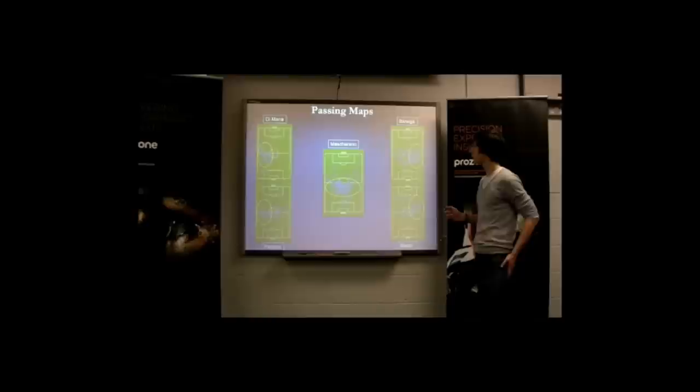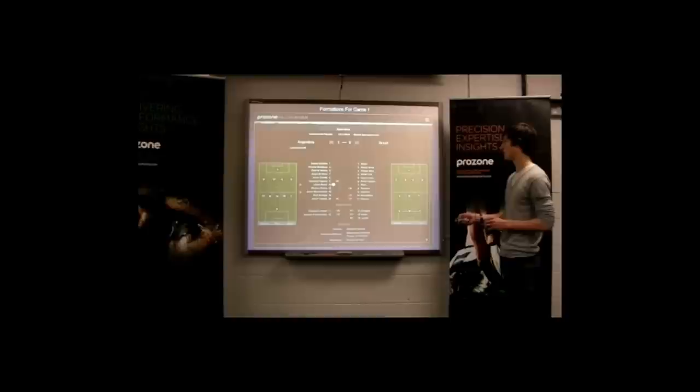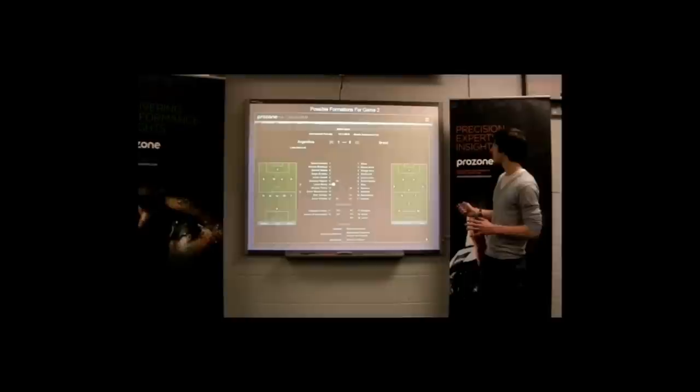As we saw earlier, the passing map showed how dominant Argentina were in midfield. From the formation, we can see the Brazil formation had three in the centre midfield, where Argentina had five. It just showed how dominant the five could be.